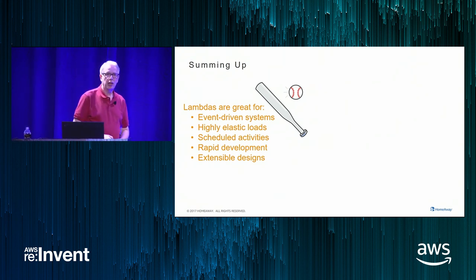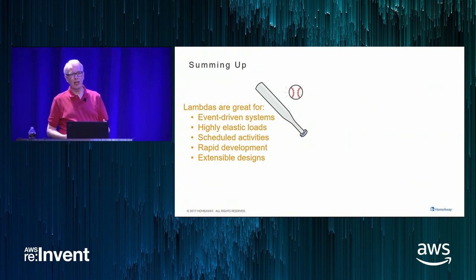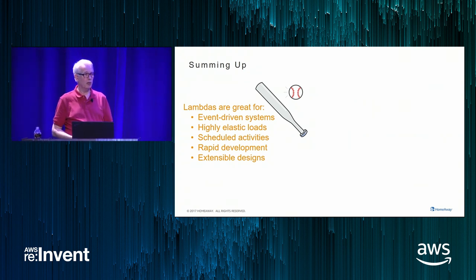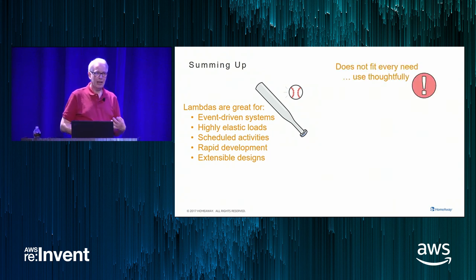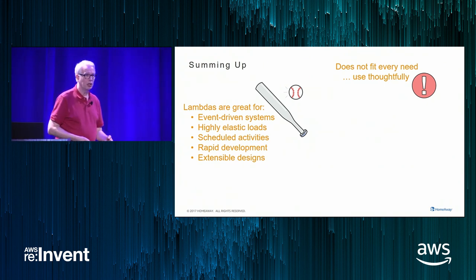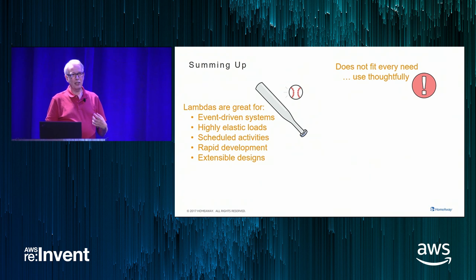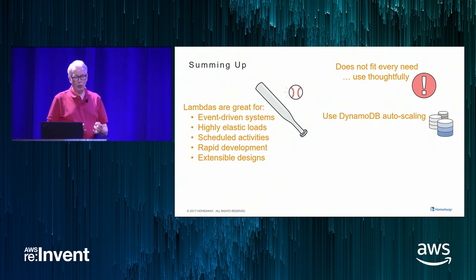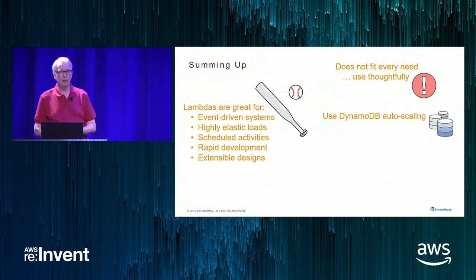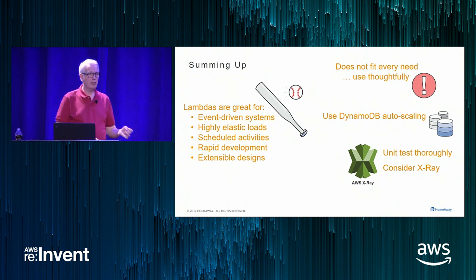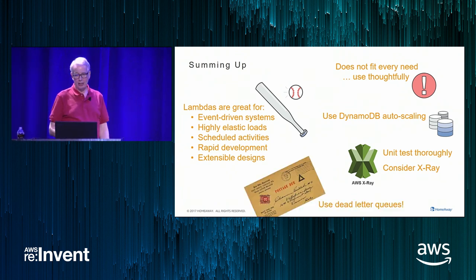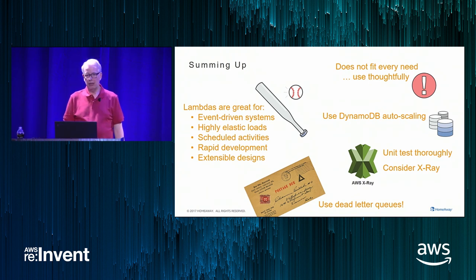To sum up: Lambdas are really great for event-driven systems, for highly elastic and highly scalable loads, and for scheduled activities. Development of Otis took about half the time it would have if we'd written a traditional collection of large Java application servers, and it's highly extensible. It doesn't fit every need — you want to model costs and figure out if it's really going to be cost effective. Always look at DynamoDB auto scaling — it would have saved us a lot of pain. Unit test thoroughly, consider using X-Ray, and always use dead letter queues. That is everything that I have to say.